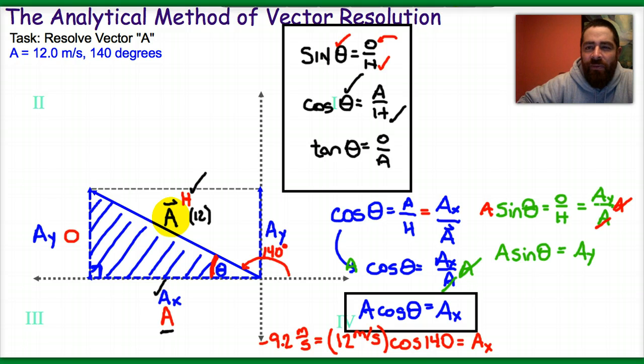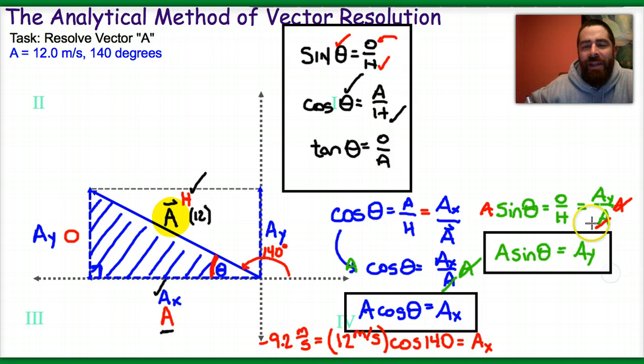And just like before, I've boxed it in, I'm going to go ahead and box this in as well. This is another big idea. I can find the vertical component of a vector by multiplying the magnitude of that vector times the sine of the angle.